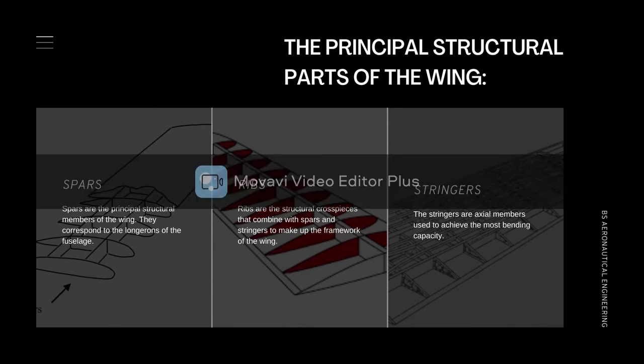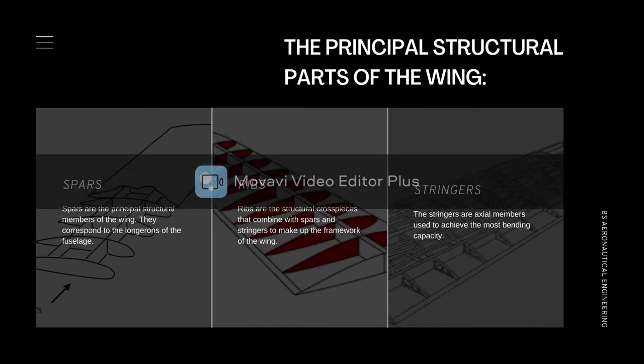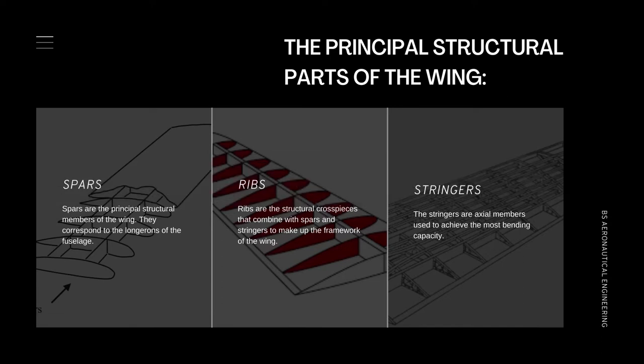Lastly, the stringers. Stringers are axial members used to achieve the most bending capacity. If we assume that a distributed air pressure is applied at the top or bottom skin of the wing, the skin is thin and has little bending stiffness to resist the air pressure. To avoid large deflections in the skin, longitudinal stringers can be added to pick up the air loads. The stringers are usually slender axial members with a moderate amount of bending stiffness. Therefore, the transverse loads picked up by the stringers must be transferred quickly to more rigid ribs or frames to avoid excessive deflections.